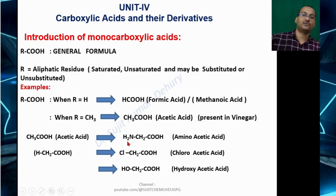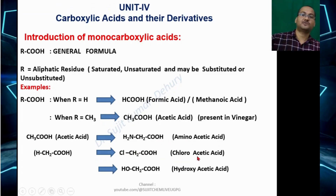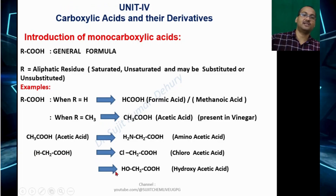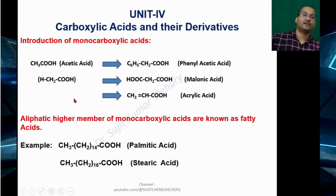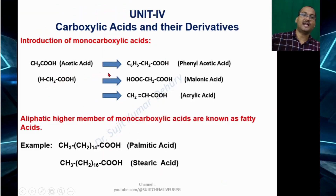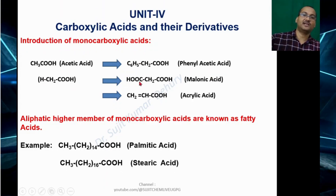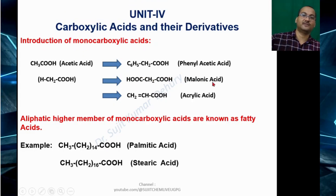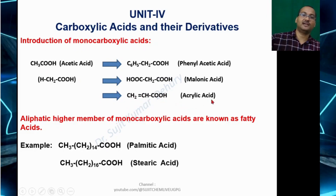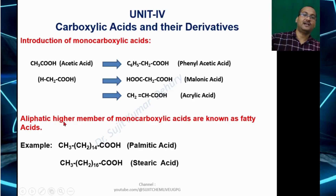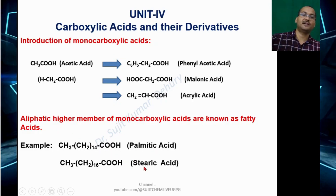If we replace a hydrogen in acetic acid with an NH2 group, it becomes aminoacetic acid; with chlorine, it becomes chloroacetic acid; with an OH group, it becomes hydroxyacetic acid; with a phenyl group, it becomes phenylacetic acid; and with a carboxylic acid group, it becomes malonic acid. The aliphatic higher members of monocarboxylic acids are known as fatty acids, for example palmitic acid and stearic acid.